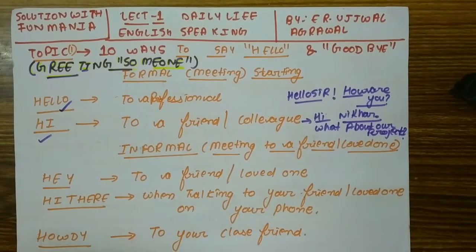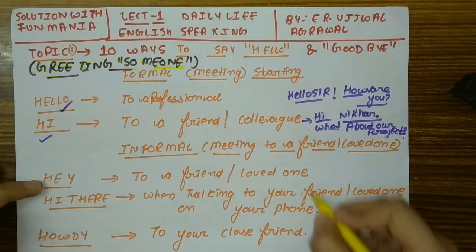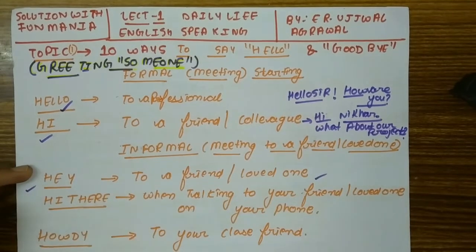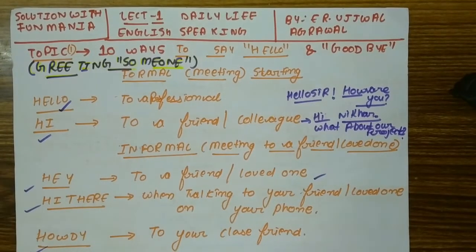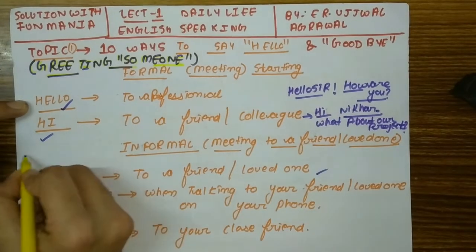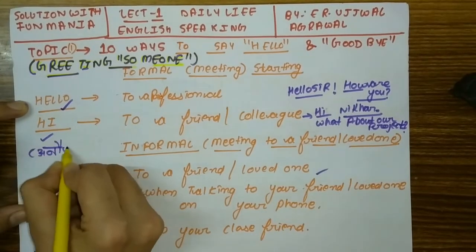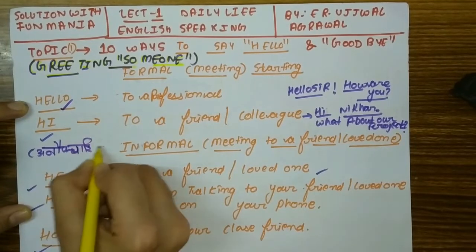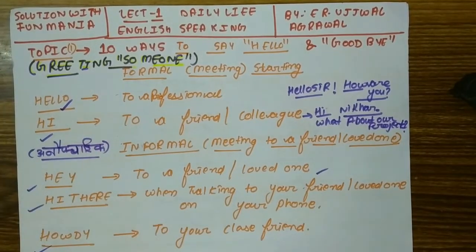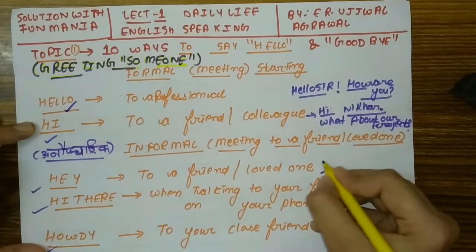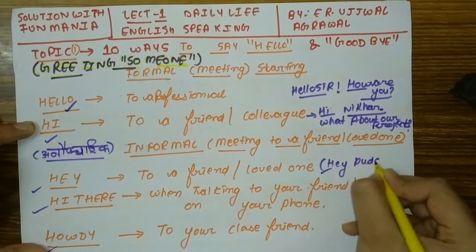Next, we have an informal meeting. When we meet a friend or a loved one, we will talk about that kind of language. An informal meeting means we have no official or formal terms — we are just friends. We have a family member. For example, how are you? When we have a friend, we generally say 'Hey buddy.'